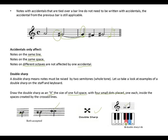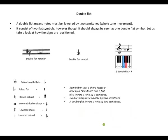On the keyboard, a double sharp moves a whole tone. For example, D double sharp means moving from D, passing D sharp, and going all the way to E — a whole tone movement.